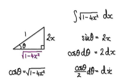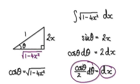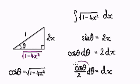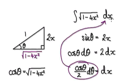Divide both sides by 2, so dx equals (1/2)cos θ dθ. We can then substitute this expression in for dx.